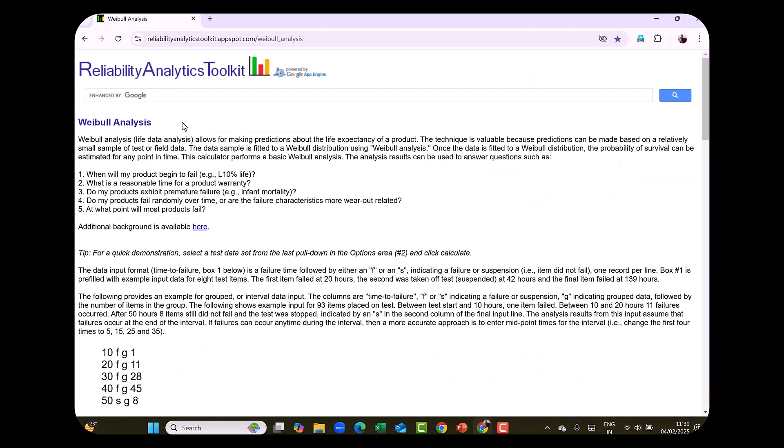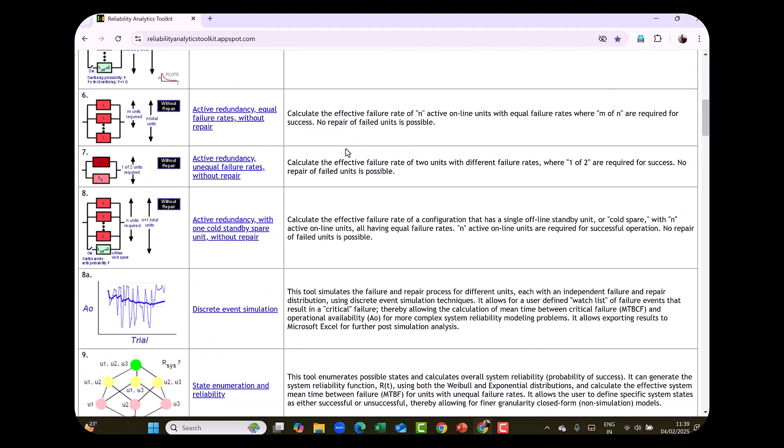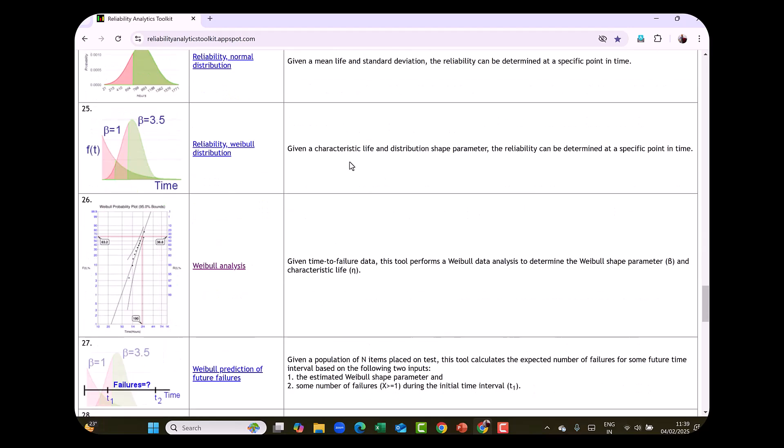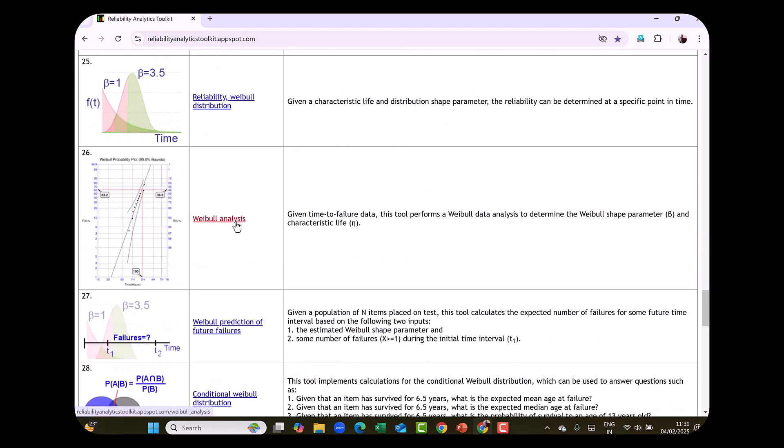Go to the website Reliability Analytics Toolkit and go to Weibull analysis. I will show it again. So this is your website Reliability Analytics Toolkit. Scroll down. You will see the command, procedure, Weibull analysis, click on that.